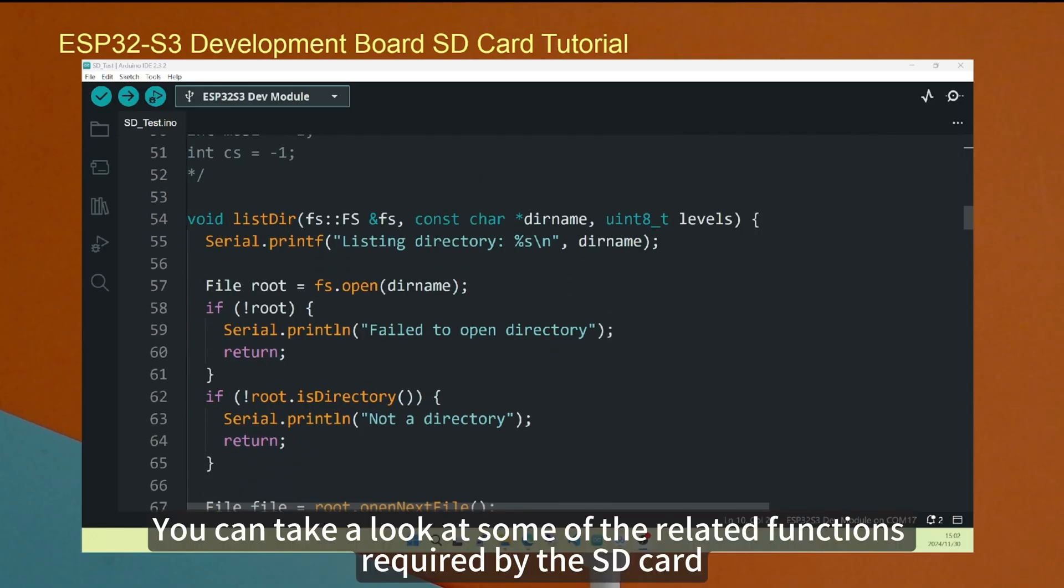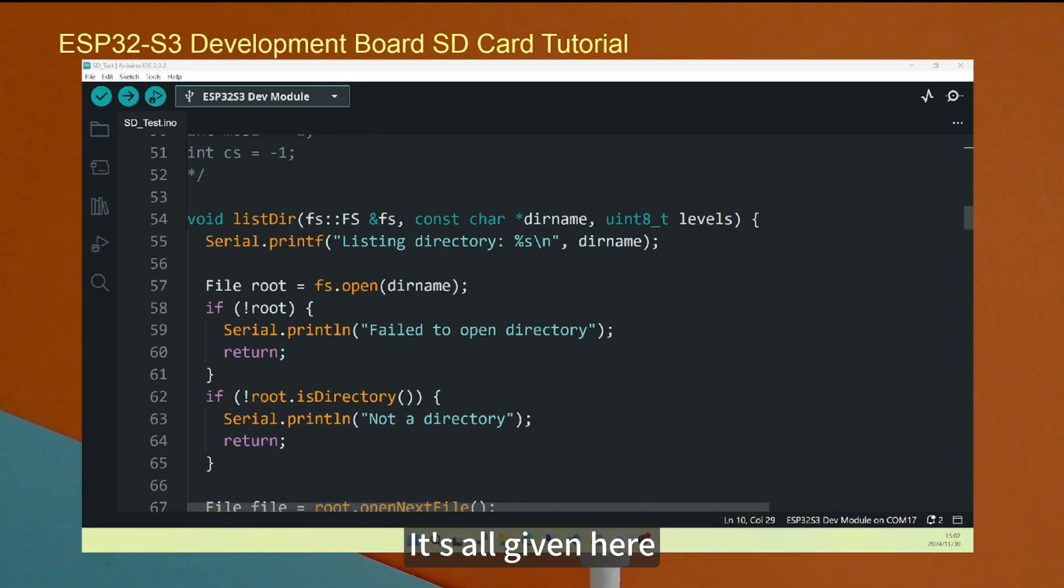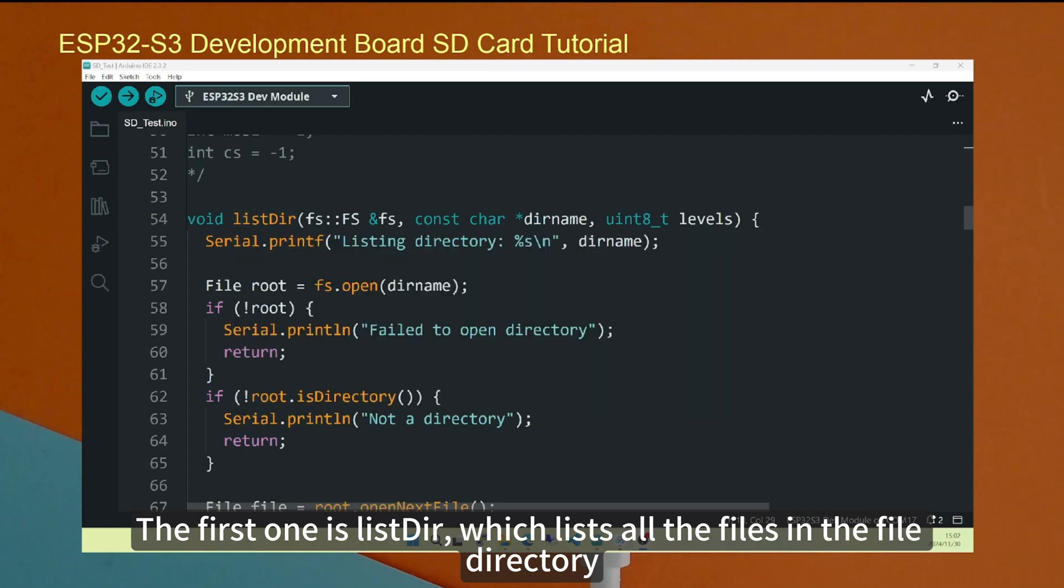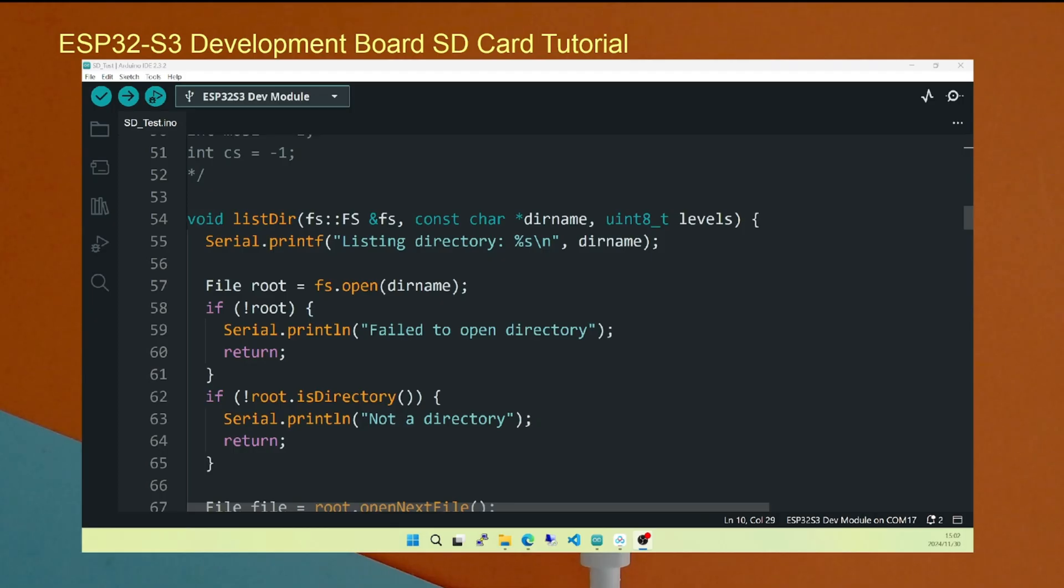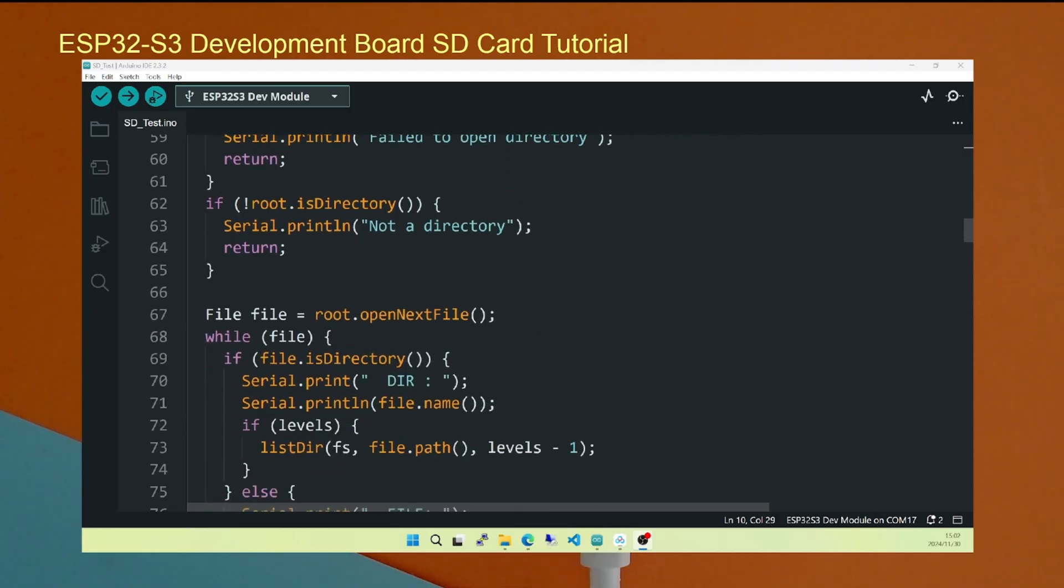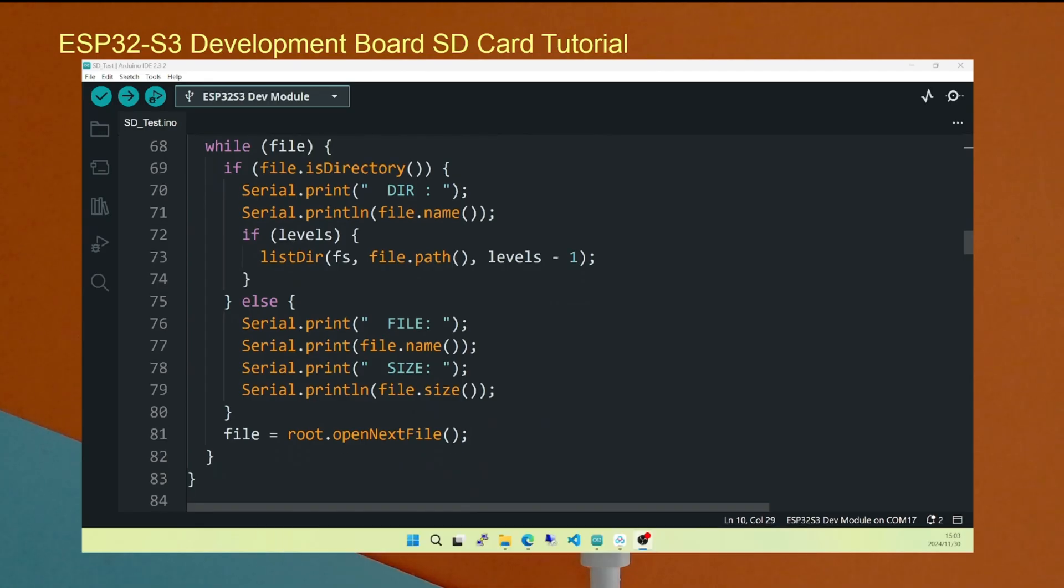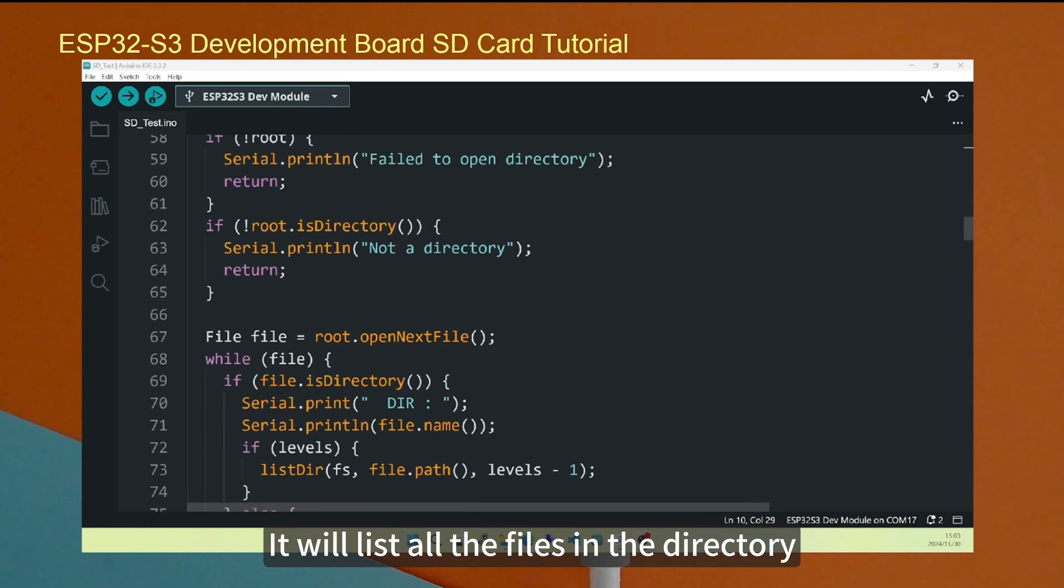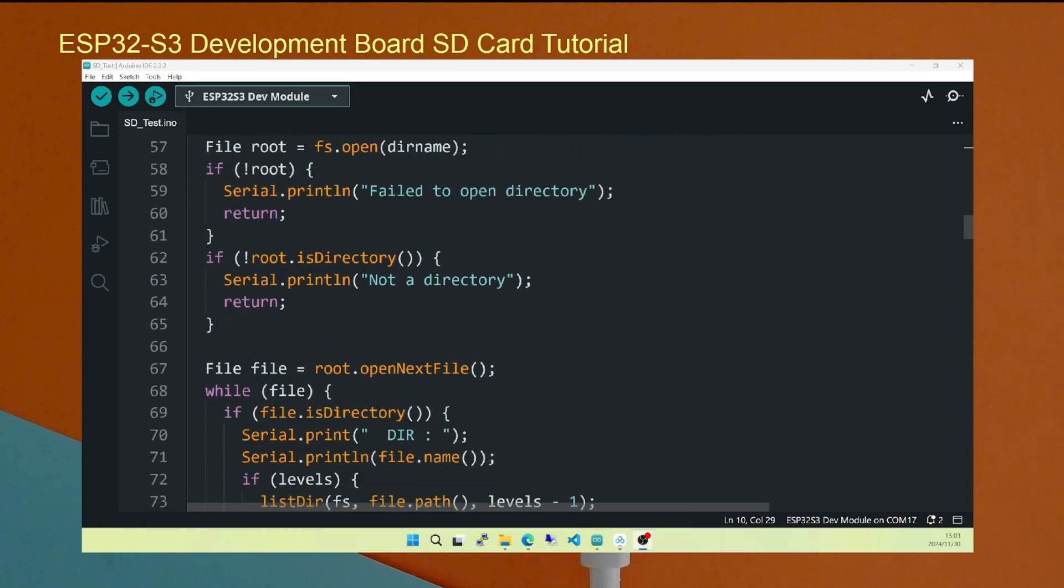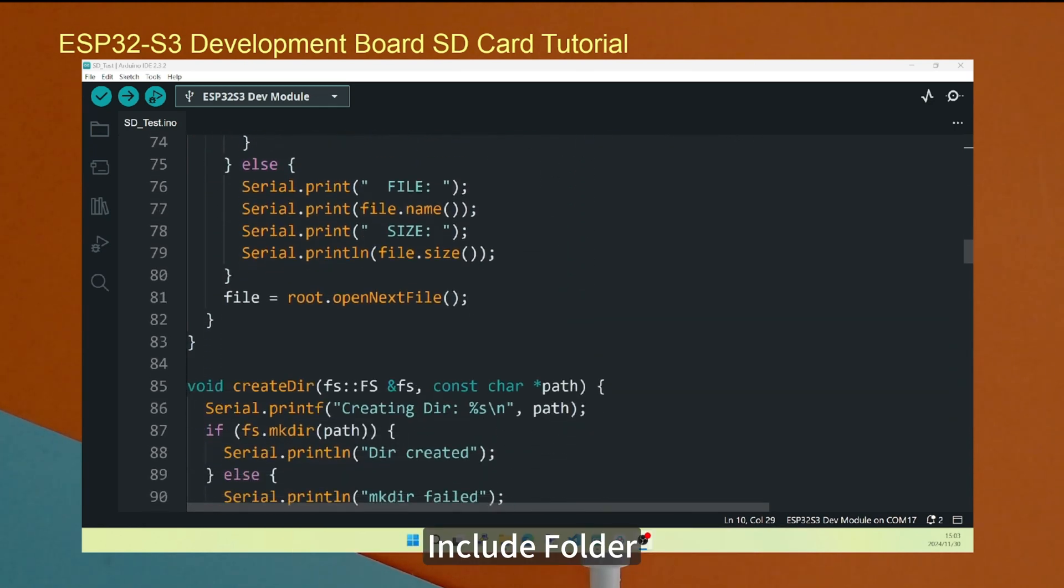You can take a look at some of the related functions required by the SD card. It's all given here. The first one is ListDir, which lists all the files in the file directory. This is a file that can be read in a loop. It will list all the files in the directory, including folders.